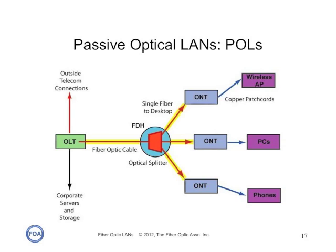Here is a block diagram of the optical LAN, or passive optical LAN, used in applications like the San Diego Public Library. It's exactly the same block diagram as a fiber-to-the-home PON network, which has tens of millions of users around the world.